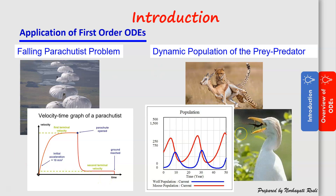Another application of ordinary differential equations is the dynamic population of prey and predator. The prey, for example, is a deer, and the predator in this case is a jaguar. The population dynamics of this prey-predator system can be represented by the rate of change of the number of that population with respect to time. Because we have two species, the differential equation will be a system of two ordinary differential equations.